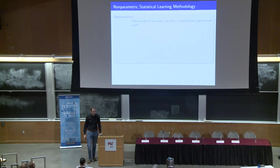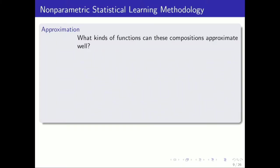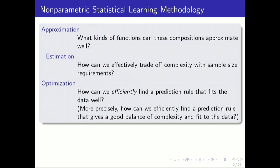There are some key issues that we want to think about here. There's the approximation issue. What sort of functions can you represent with these kinds of structures? The estimation issue, which is, we want to estimate a function that performs well, let's say, in expectation, and we're doing that from some finite samples. Of course, there's going to be a trade-off between complexity and sample size requirements for that sort of thing. And the optimization issue. We have to come up with a function in that class of functions, and we want to do that fast. There's a computational problem of finding a prediction rule that gives a good balance between the statistical complexity and the fit to the data.